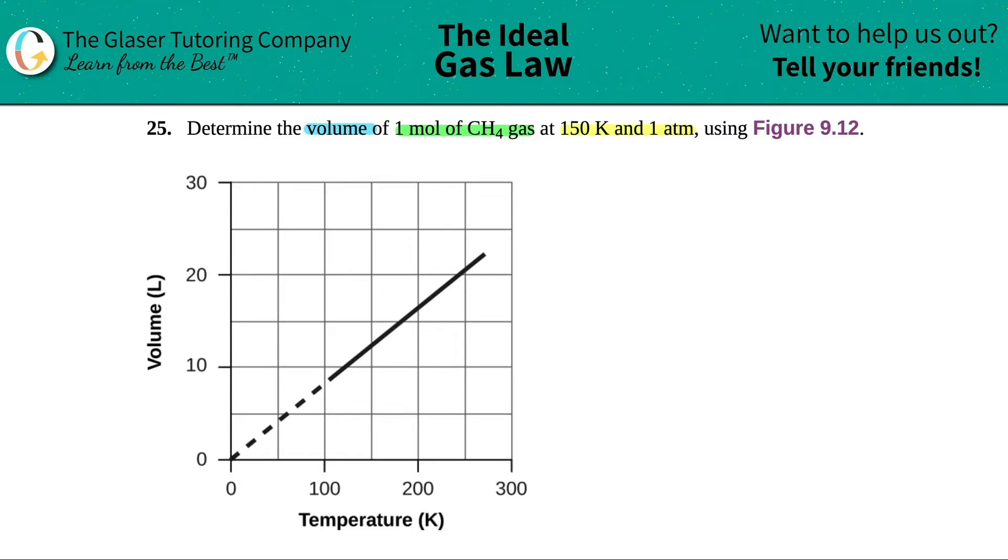Now, in order to get the right answer, I looked back at this figure, and this figure is actually for one mole of CH4, and this is at 1 atm. So this one mole of CH4 gas and 1 atm, we do not have to change anything about the graph, because if you look back into this figure, it did state that this was for one mole of methane and 1 atm.